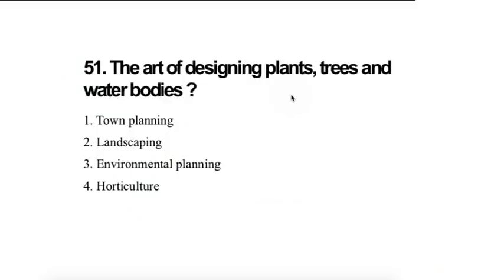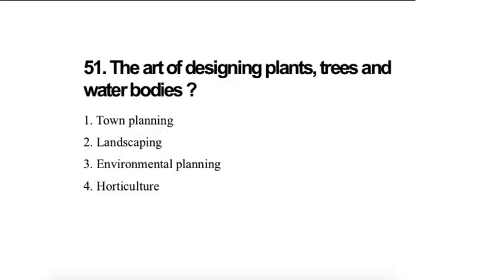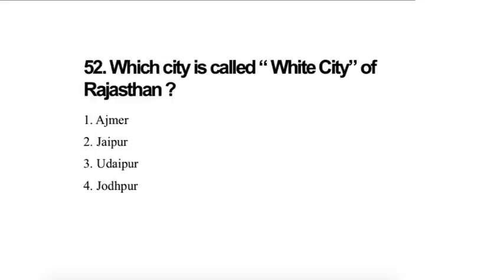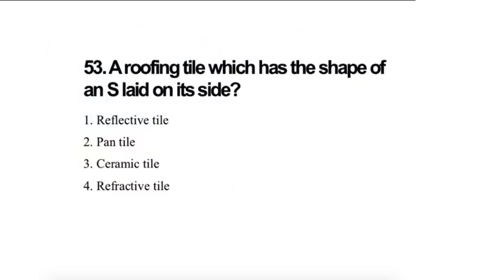The art of designing plants, trees and water bodies is landscaping. Horticulture is growing crops plus fruits. So you have to see what horticulture ka matlab kya hota hai and landscaping is the designing of plant, trees and water bodies. Which city is called white city of Rajasthan? White city is Udaipur. A roofing tile which has a shape of S laid on the side, you've seen these tiles, like this. One tile goes like this over another tile. These are called pan tiles.